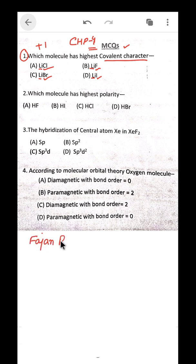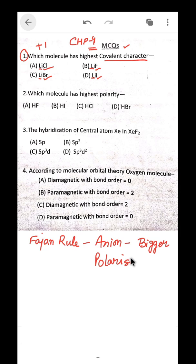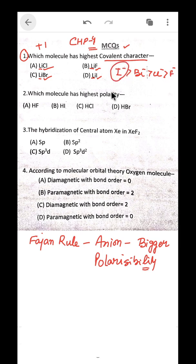According to Fajan's rule, the bigger the size of the anion, the higher its polarizability. Polarizability depends upon the size of the anion. Iodide has the largest size, followed by Br⁻, Cl⁻, and F⁻. So the highest polarization occurs in the case of iodide, meaning lithium iodide has the highest covalent character — that is the correct answer.